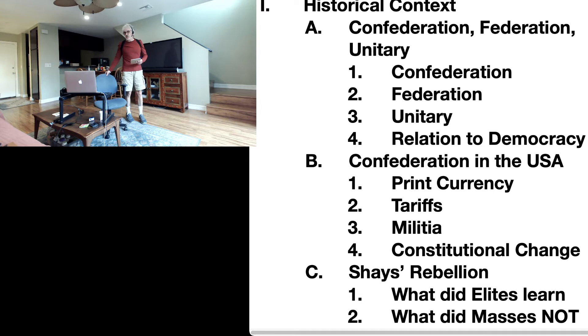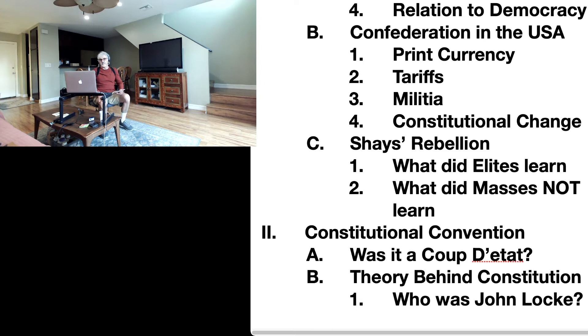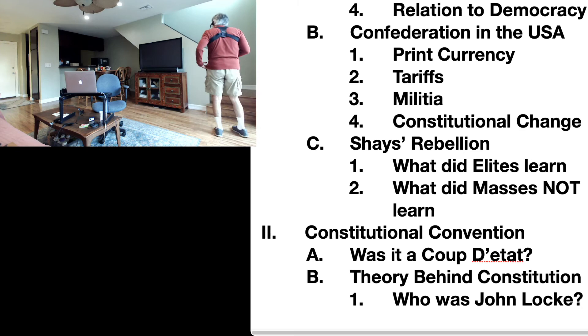So, Roman numeral number two: the Constitutional Convention. You can see it on the lecture outline. Write it down. Some researchers have argued that when the Founding Fathers met at the Constitutional Convention in Philadelphia, they created a coup d'etat.